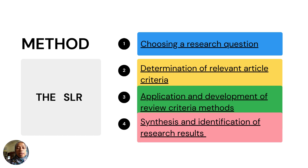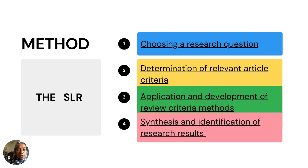Regarding the method, this research uses Systematic Literature Review (SLR) to determine whether green accounting, environmental accounting, and carbon accounting refer to the same thing or not. The method consists of four steps: first, choosing a research question; second, determination of relevant article criteria; third, application and development of review criteria methods; and last, synthesis and identification of research results.